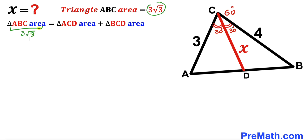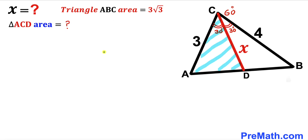So let's now focus on these two individual triangles ACD and BCD and calculate their areas. We'll start by calculating the area of triangle ACD.